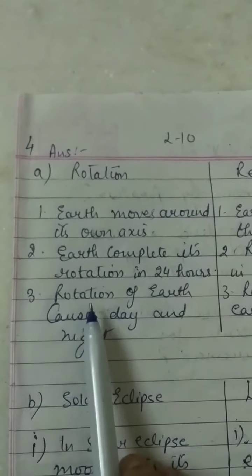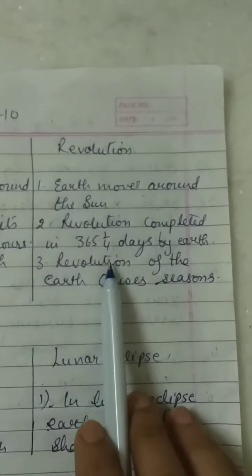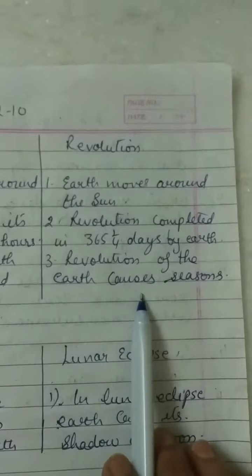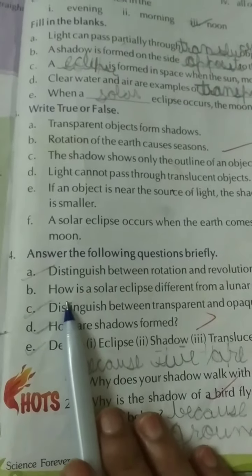Third point: Rotation of earth causes day and night. Revolution: Revolution of the earth causes seasons. Question number B: How is solar eclipse different from a lunar eclipse?